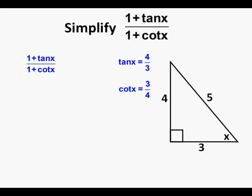And accordingly, its reciprocal, cotangent x is the reciprocal of 4-thirds, which is 3-fourths. What he did next was to replace tangent x with 4-thirds, and cotangent x in the denominator with 3-fourths.